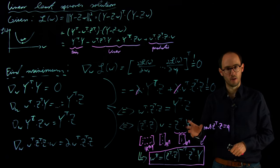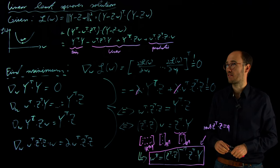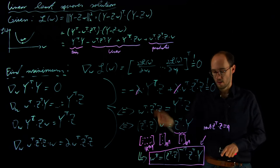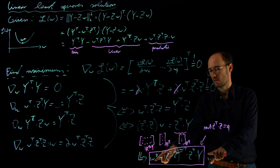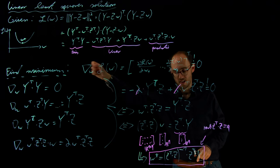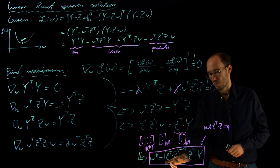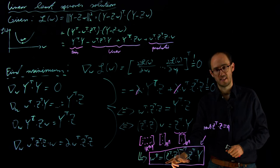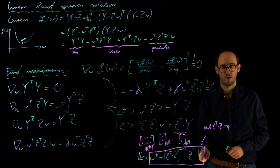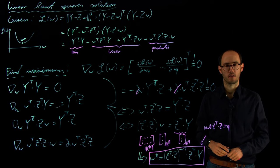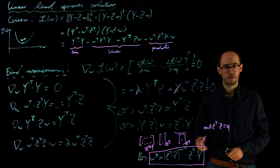The key takeaway is that given our least squares problem for a linear model, we are able to get a closed-form solution and find the best possible parameter vector w which minimizes our quadratic loss. This solution depends only on our observables — the regressor matrix z and our measured outputs y — so we can obtain it directly from the data. In the next video we will see a first application example including numerical programming code showing how to utilize this closed-form linear least squares solution in an engineering application.